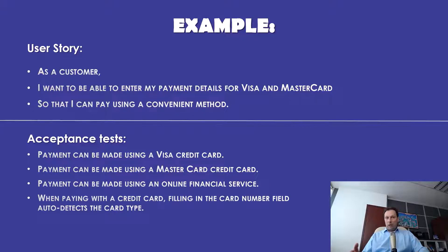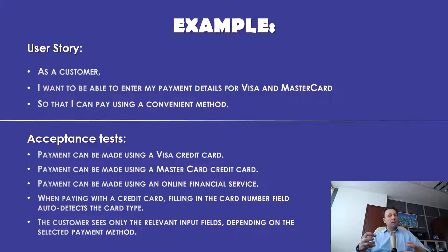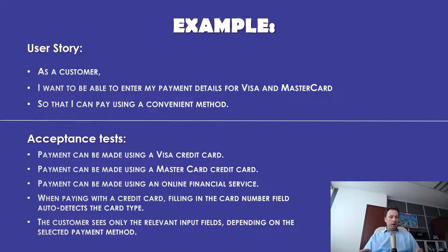Payments can be made using an online financial service. When paying with a credit card, filling in the card number field auto-detects the card type. The customer sees only the relevant input fields depending on the selected payment method. Those are just a few examples and there could be lots more. The context of these acceptance criteria is usually determined by your client's specific needs. They all follow a similar structure — they are simple, easy to verify, and all relate to paying with different payment types as specified in the user story.